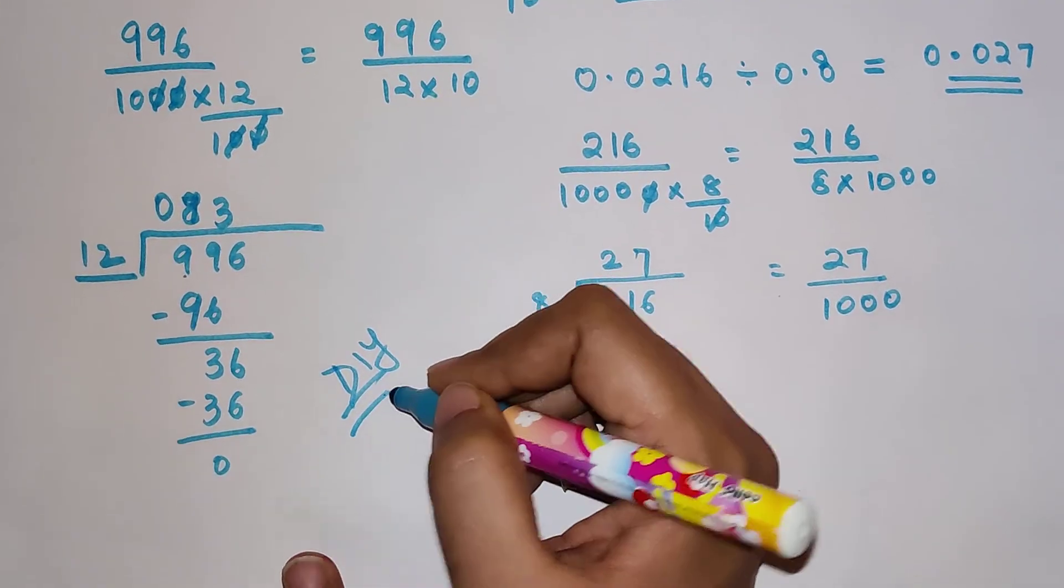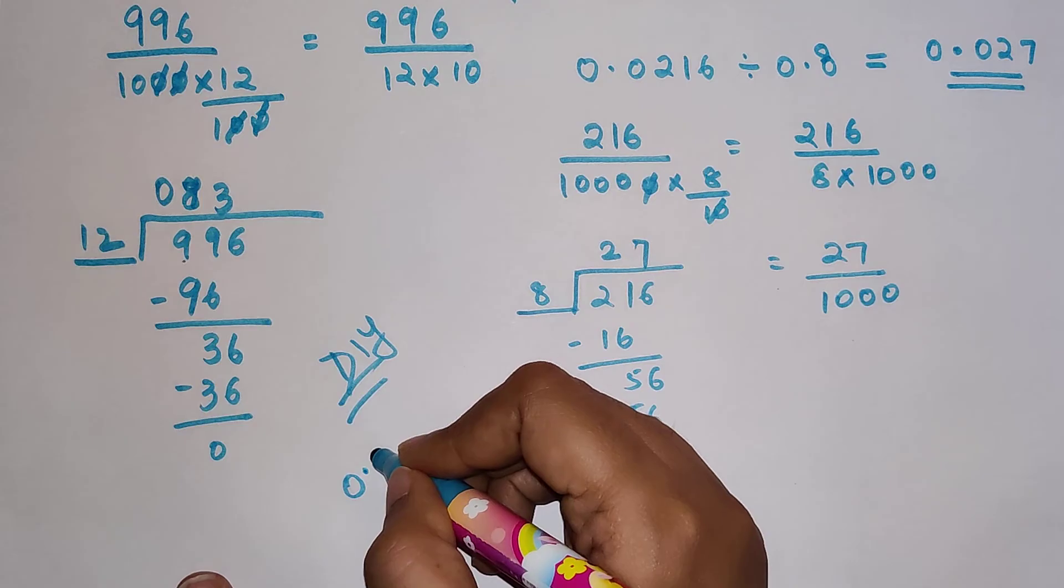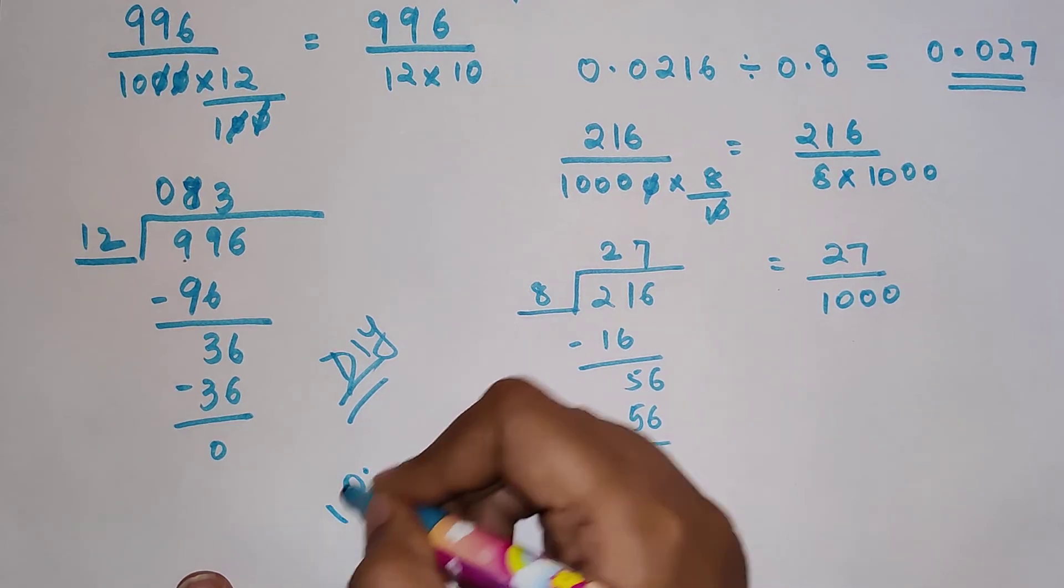I hope you all have understood how to do this. So now your time for your DIY. The question is, please tell me what should be your answer for 10.8, 0.8 divided by 0.06.